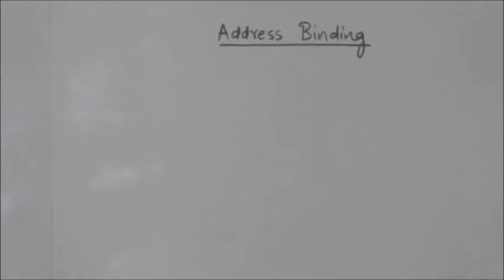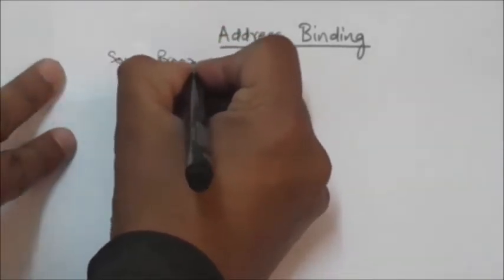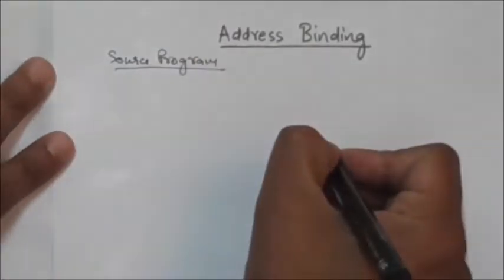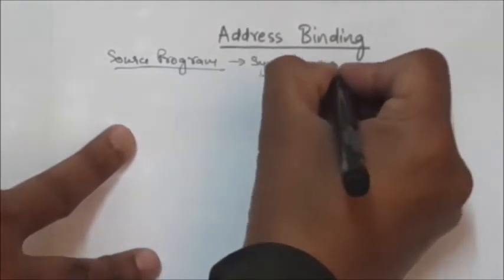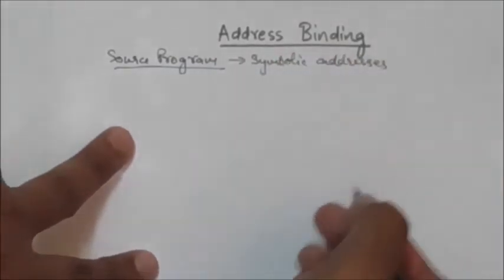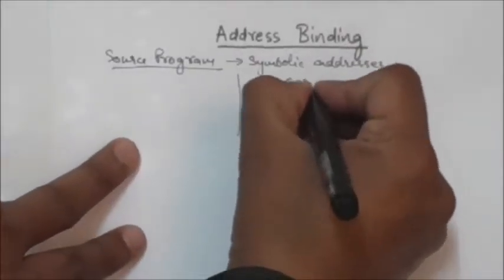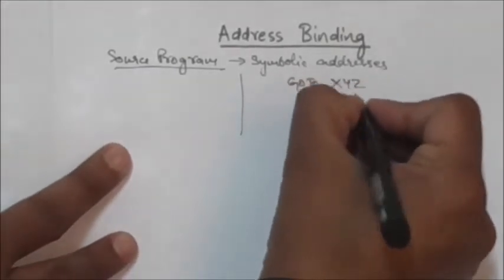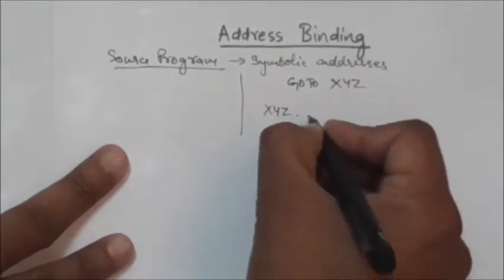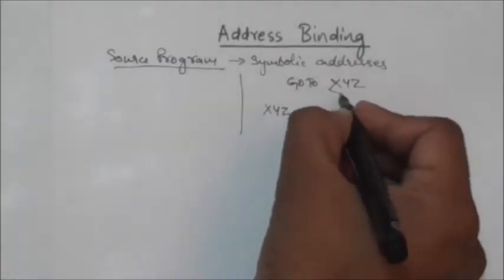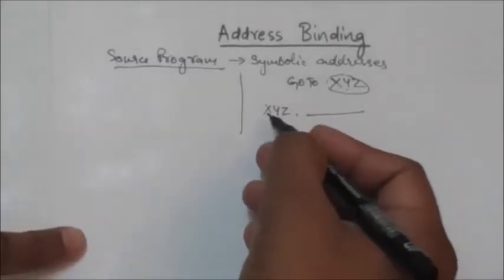In this tutorial we are going to study about address binding. In a source program, symbolic addresses are generally used. For example, suppose there is a statement 'go to XYZ' and XYZ is a label of some line of code. This symbol XYZ is a symbolic address — it represents the address of the line of code whose label is XYZ.